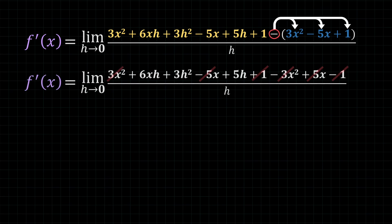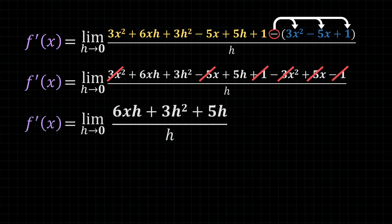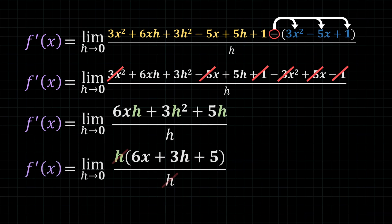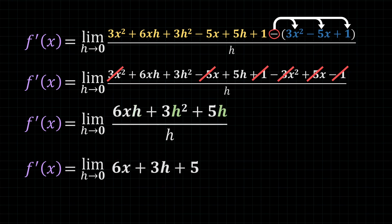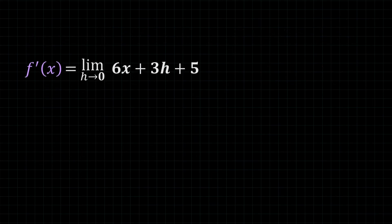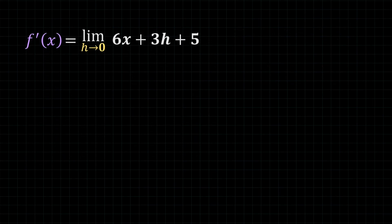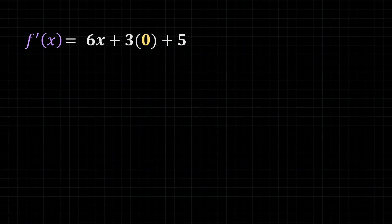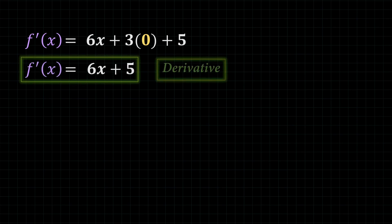Now we can simplify and combine like terms, giving us something that looks like this. This is good because every single term in the numerator has an h, which means we can factor it out. Once we factor it out, we can cross it out with the denominator, which solves the main problem — we cannot plug in zero for h when there is an h in the denominator. Now the limit only has the numerator, and once we only have the numerator, we can plug in zero for h, which gives us our simplified expression. The limit is gone once we substitute zero in for h, and a quick simplification gives us our derivative.